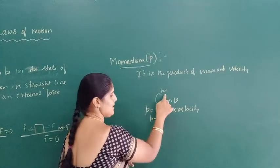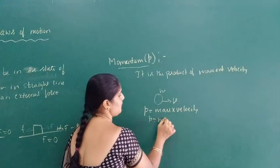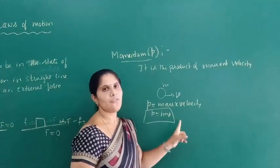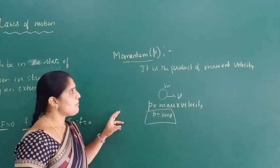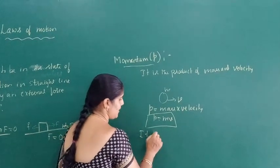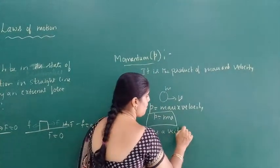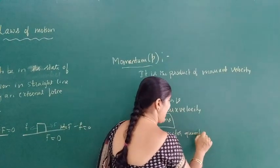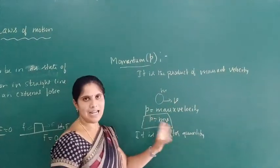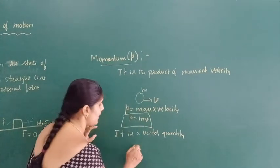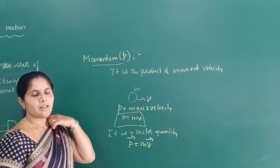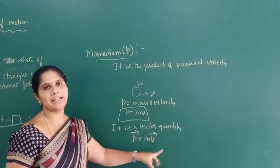Momentum is denoted by P, where P equals mass M multiplied by velocity V — that is, P = M × V. This is the momentum. Momentum is a vector quantity because it has both magnitude and direction. In vector form, this momentum is written as vector P is equal to M into vector V.